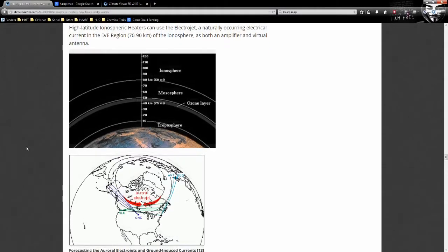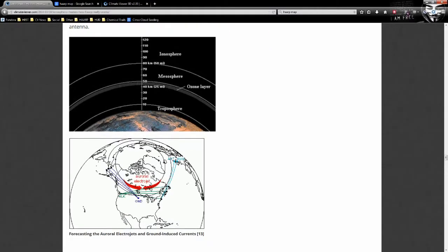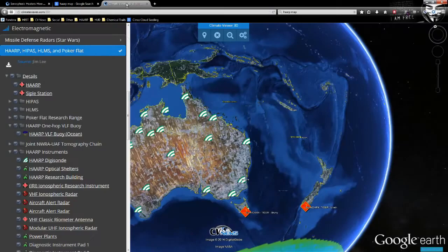Now, the electrojet is something special. And it's right here. See this ring? Over here on Climate Viewer 3D.